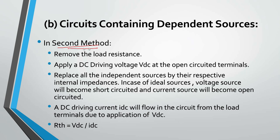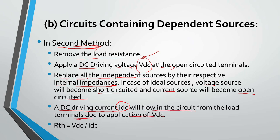Now we will see the second method of calculating RTH. In this method, we first remove the load resistance, then apply a DC driving voltage VDC at the open-circuited terminal. We replace all independent sources by their respective internal impedances — voltage sources become short circuits, current sources become open circuits. A DC driving current IDC will then flow in the circuit from the load terminals, and RTH equals VDC divided by IDC.